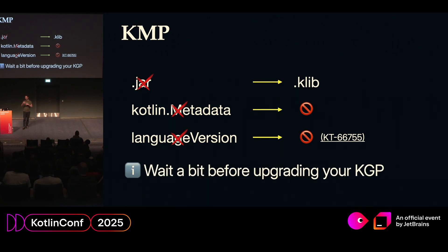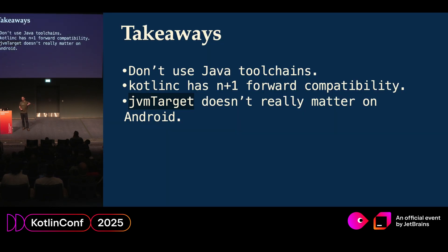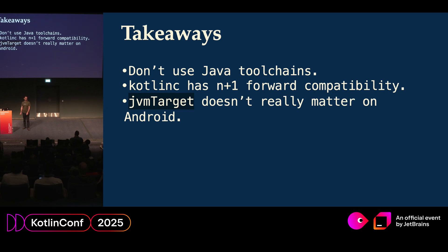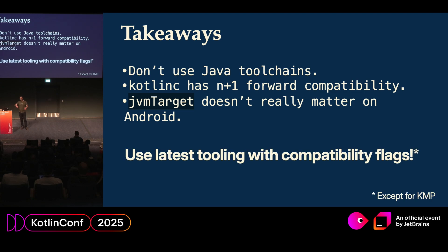Always leave a bit of room for your users to update at their own pace. A few key takeaways: don't use Java toolchain — please stop, despite what everybody tells you. Keep remembering this N+1 forward compatibility — it's not very common in the ecosystem so it can be surprising, but it gives more compatibility. JVM target on Android you can experiment with, but it's not that important. And always use the latest tooling with compatibility flags.